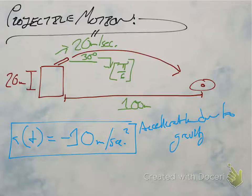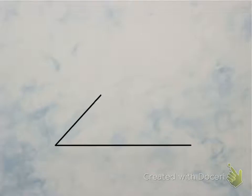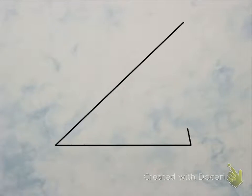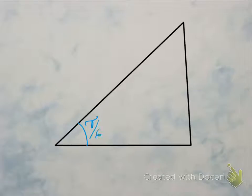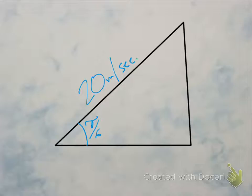A great thing for us to do would be to make a triangle, since using trig is going to be the only easy way to figure out what we need to do here. Let's go ahead and construct a triangle. We've got ourselves a triangle. What do we know about this triangle? We know this angle right here is pi over 6, and we know our velocity in this direction along our hypotenuse is 20 meters per second. We've got our velocity in this direction and our angle at which everything is being shot.